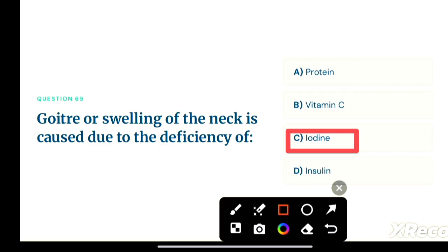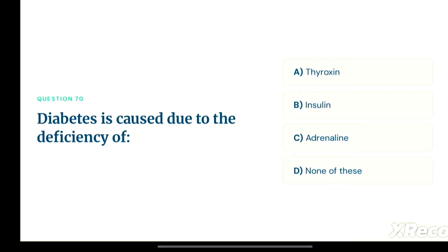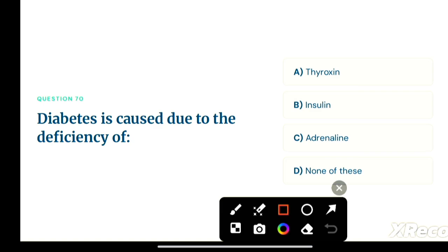Next question: diabetes is caused due to the deficiency of — option A: thyroxine, option B: insulin, option C: adrenaline, option D: none of these. The correct answer is option B, insulin. Insulin deficiency causes diabetes, which is related to blood sugar. Option B is the correct answer.